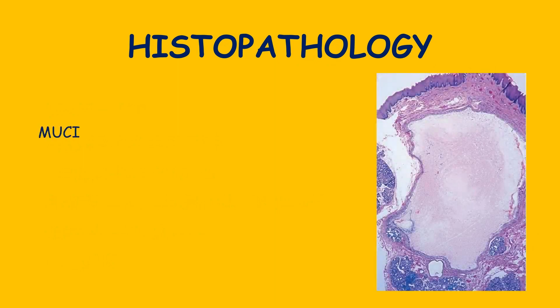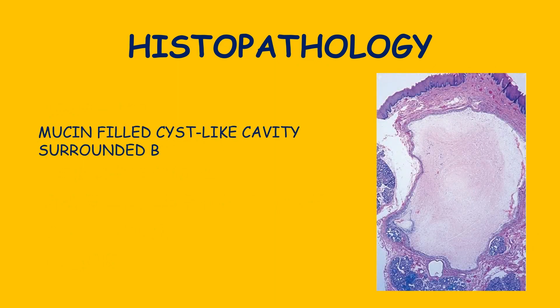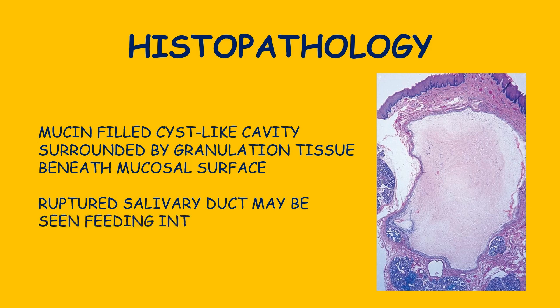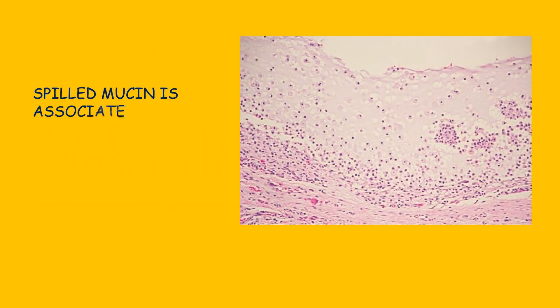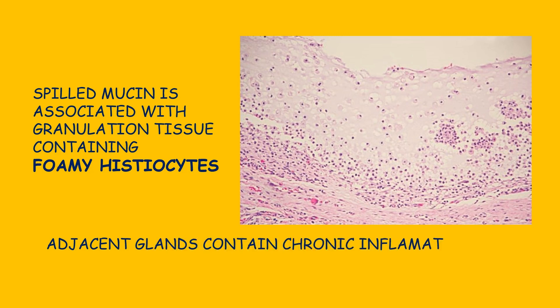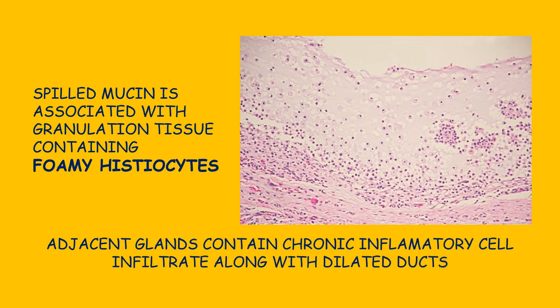Seen under a microscope, mucocele presents as a mucin-filled cyst-like cavity that is surrounded by granulation tissue beneath the mucosal surface, where ruptured salivary ducts may be seen feeding into the area. The high-power view exhibits spilled mucin associated with granulation tissue containing foamy histiocytes. The adjacent gland contains chronic inflammatory cell infiltrate along with dilated ducts.